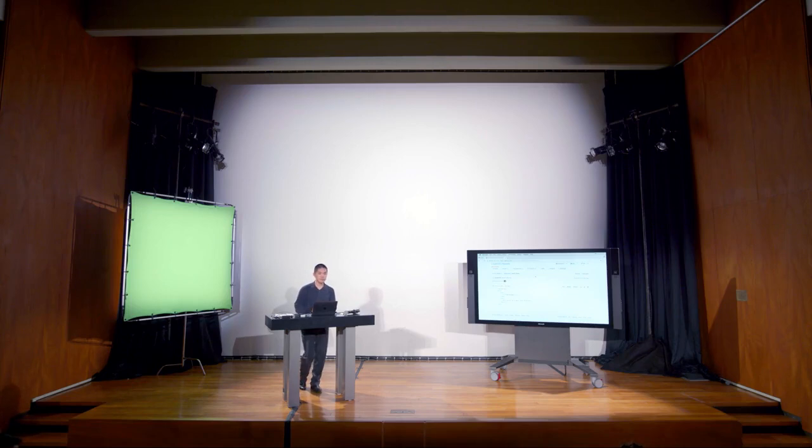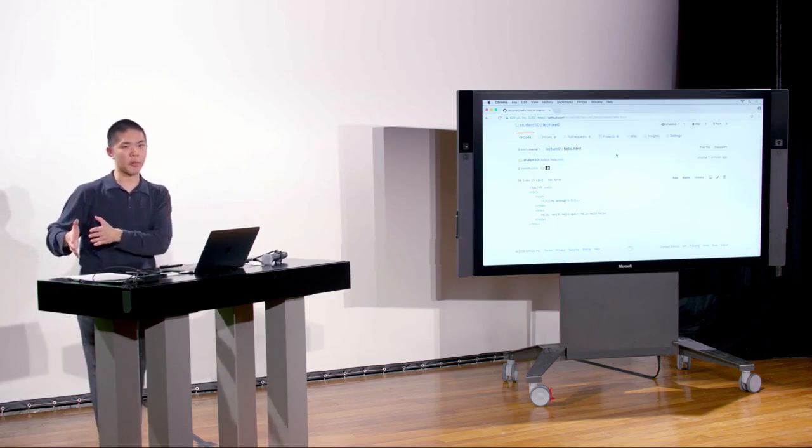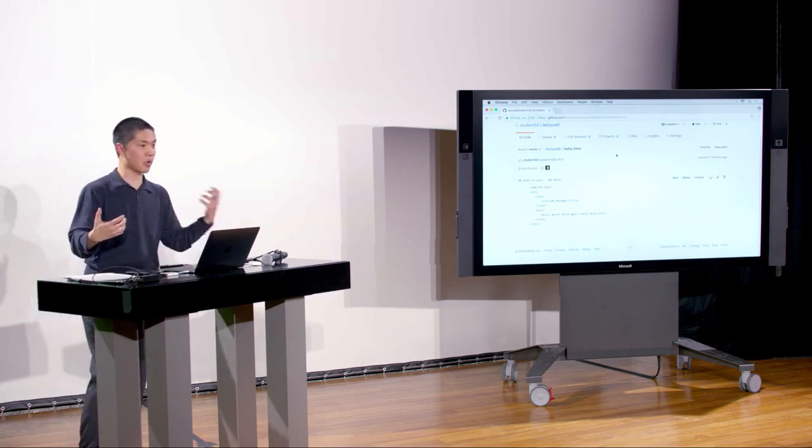A student asks: do merge conflicts only happen when pulling? The answer is no — any time you're trying to take two different versions of code and combine them, there's a possibility of a merge conflict. Later in this course, we'll look at branching, where you can keep track of multiple different versions of your repository at once. Any time you want to merge two branches together — say a feature branch back into the master branch — there are possibilities for merge conflicts. Pulling is one instance, but certainly not the only one.